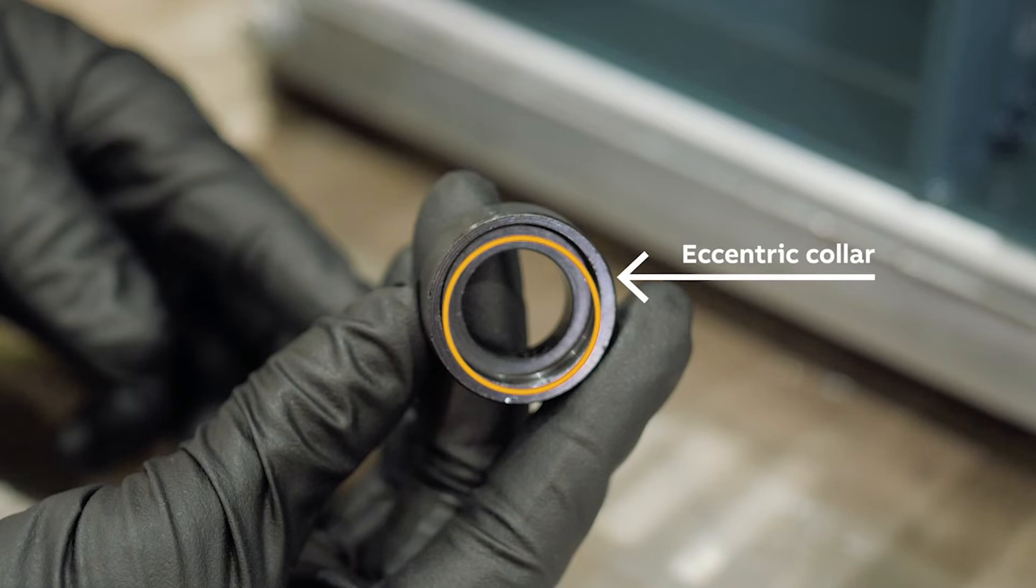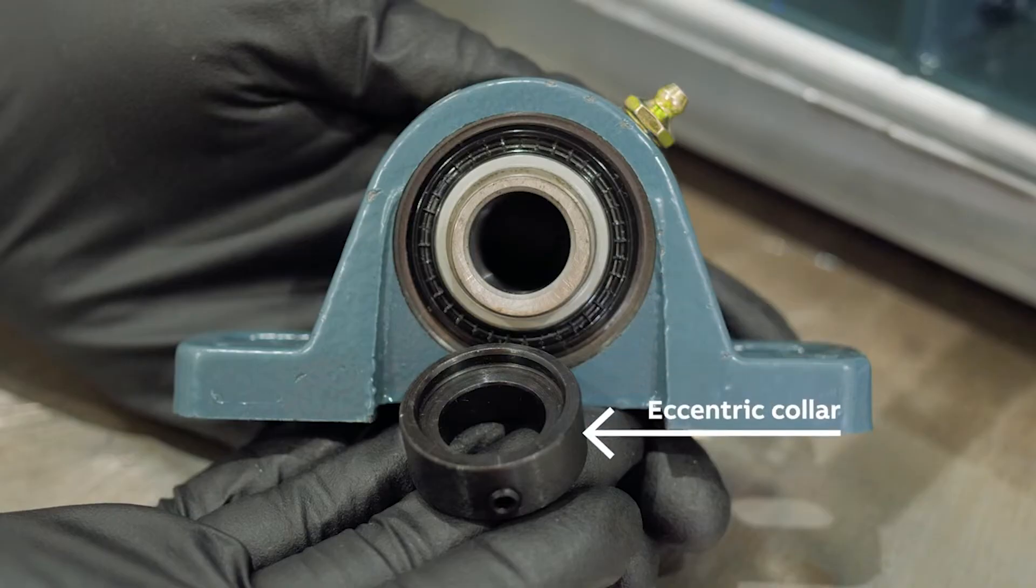Dodge eccentric collar ball bearings feature a bearing collar that is machined eccentrically or slightly off-center, which creates a groove that allows the collar to sit on a step machined into the bearing's inner ring.